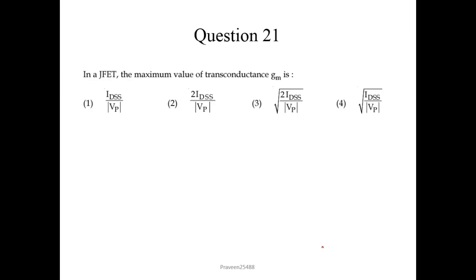Now here we will start. Our first question is: in JFET, the maximum value of transconductance GM is — this direct expression is given in option 2 as 2·IDSS upon VP. So the correct option is 2.